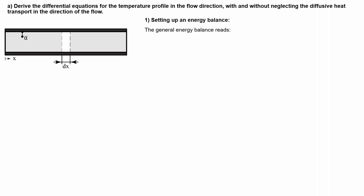The first step will be setting up the energy balance. The general energy balance for an open system states that the temporal change of inner energy equals the net rate of inflow plus the net rate of heat transport by conduction and convection, plus the internal heat generation. For each element, energy will be transported due to the motion of the fluid entering and leaving. And when it travels through each element, some of its energy is lost by convection to the environment because the temperature of the pipe is lower than that of our fluid.